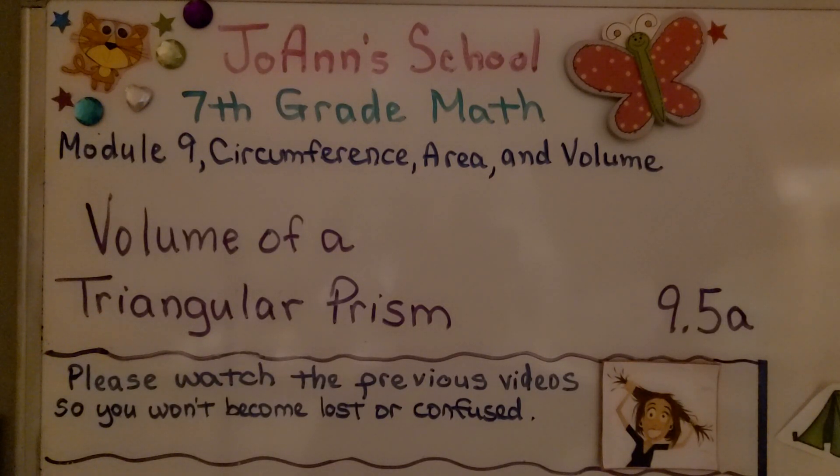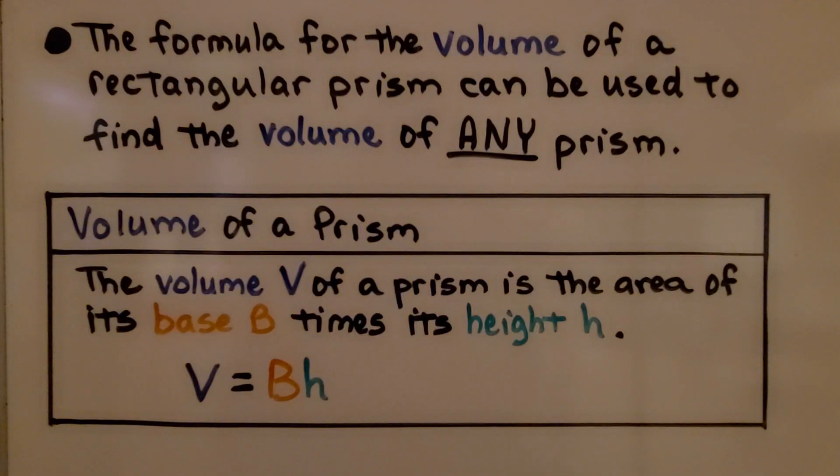Lesson 9.5a, Volume of a Triangular Prism. The formula for the volume of a rectangular prism can be used to find the volume of any prism. The volume V of a prism is the area of its base B times its height h.